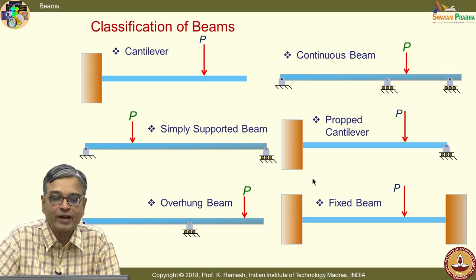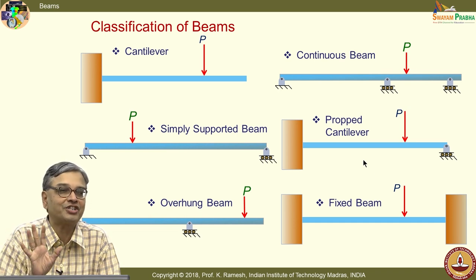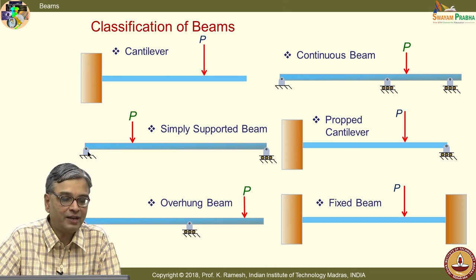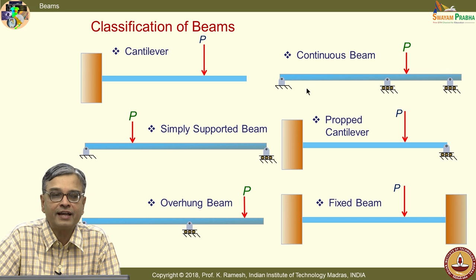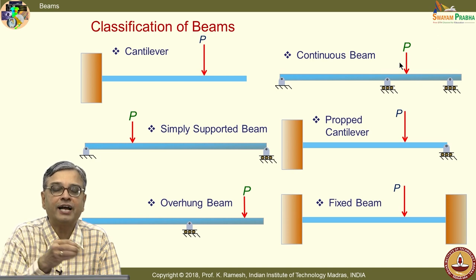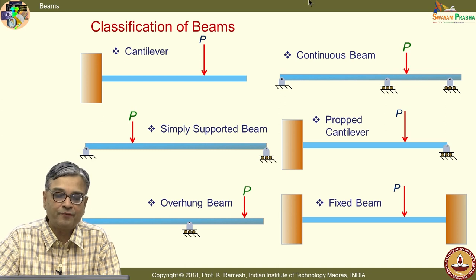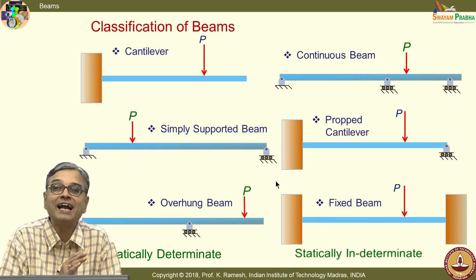Can you apply your mind and classify the beams? Take a simply supported beam — I have two unknowns at one end and one at the other, giving three unknowns solvable with three equations. On the other hand, for other beams I will not be able to solve from equations of statics alone — I have to bring in deformation behavior for additional equations. So this set is statically determinate and the other side is statically indeterminate.